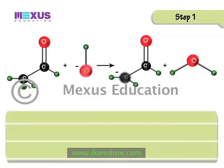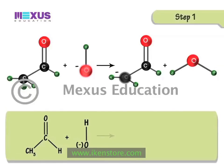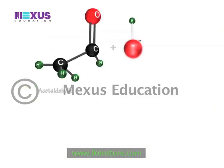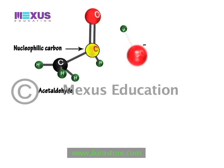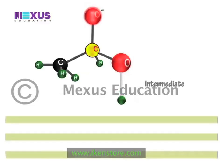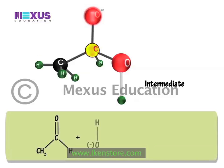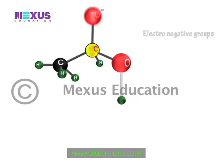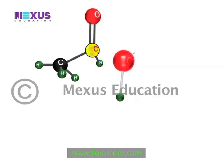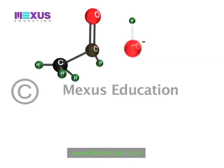Note that this is feasible primarily because of the acidity of the alpha hydrogen. Alternatively, there could be steps in which the hydroxide ion attacks at the nucleophilic carbon center forming an intermediate. The instability of the intermediate is primarily due to the two electronegative groups attached, so it degenerates back into the acetaldehyde and hydroxide ion.